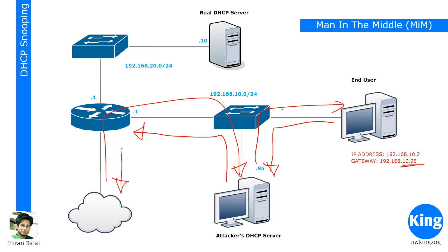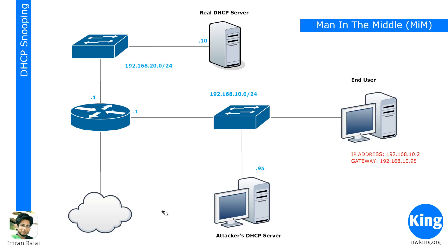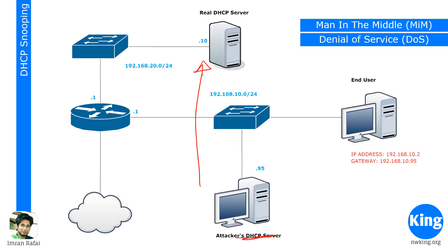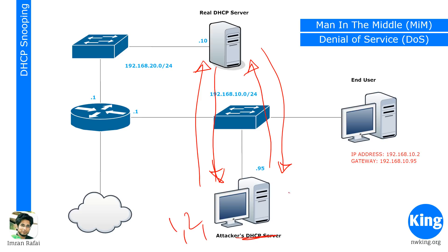The second type of attack is called a denial of service attack. In this case the attacker — not a server — would send a discover packet. The real DHCP server, upon receiving the discover message, would send an offer. The attacker would accept it, request the IP address, and receive an ACK. The attacker does this once, then after about two minutes requests again, and again — continuously keeping asking for new IP addresses.